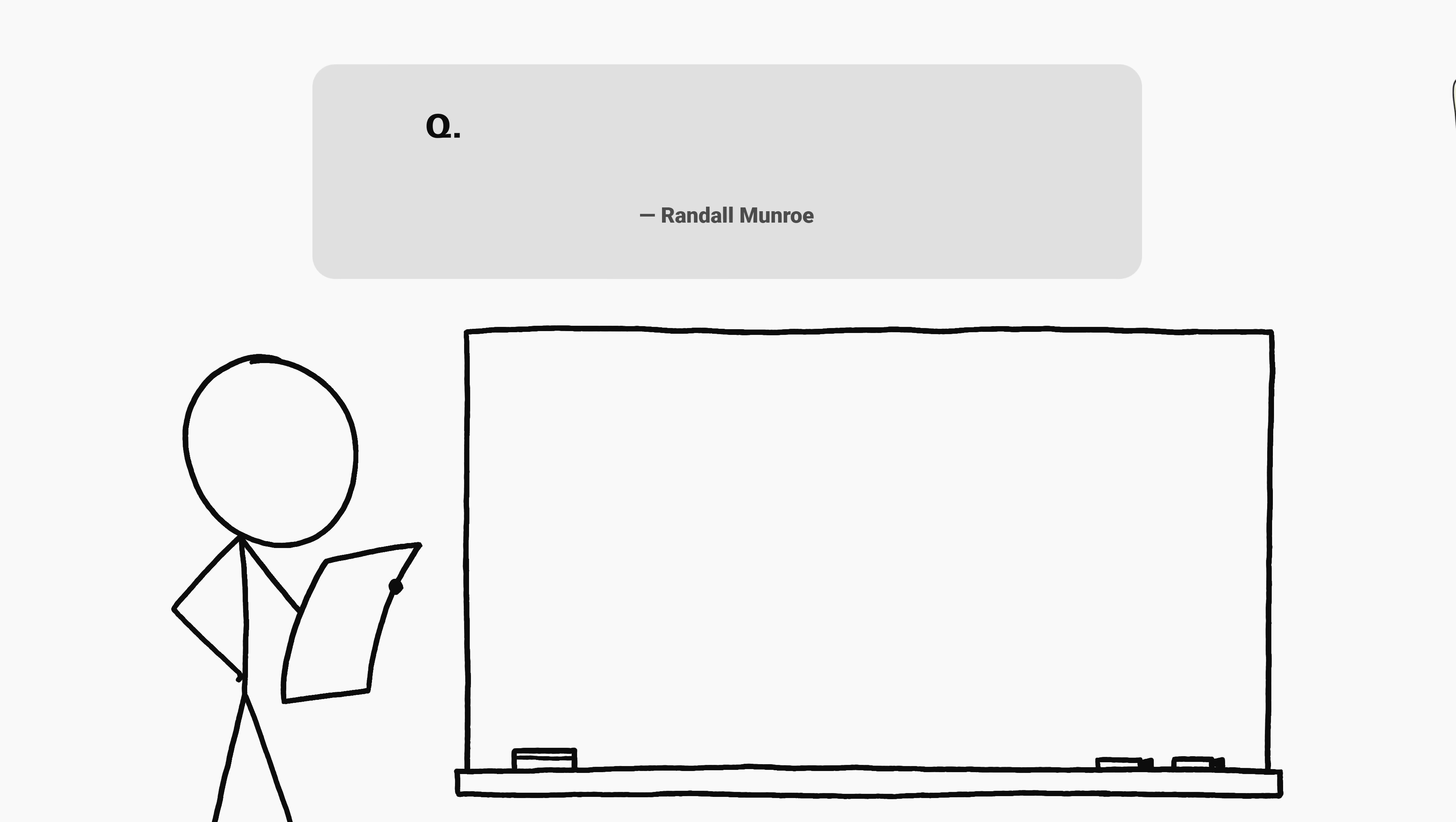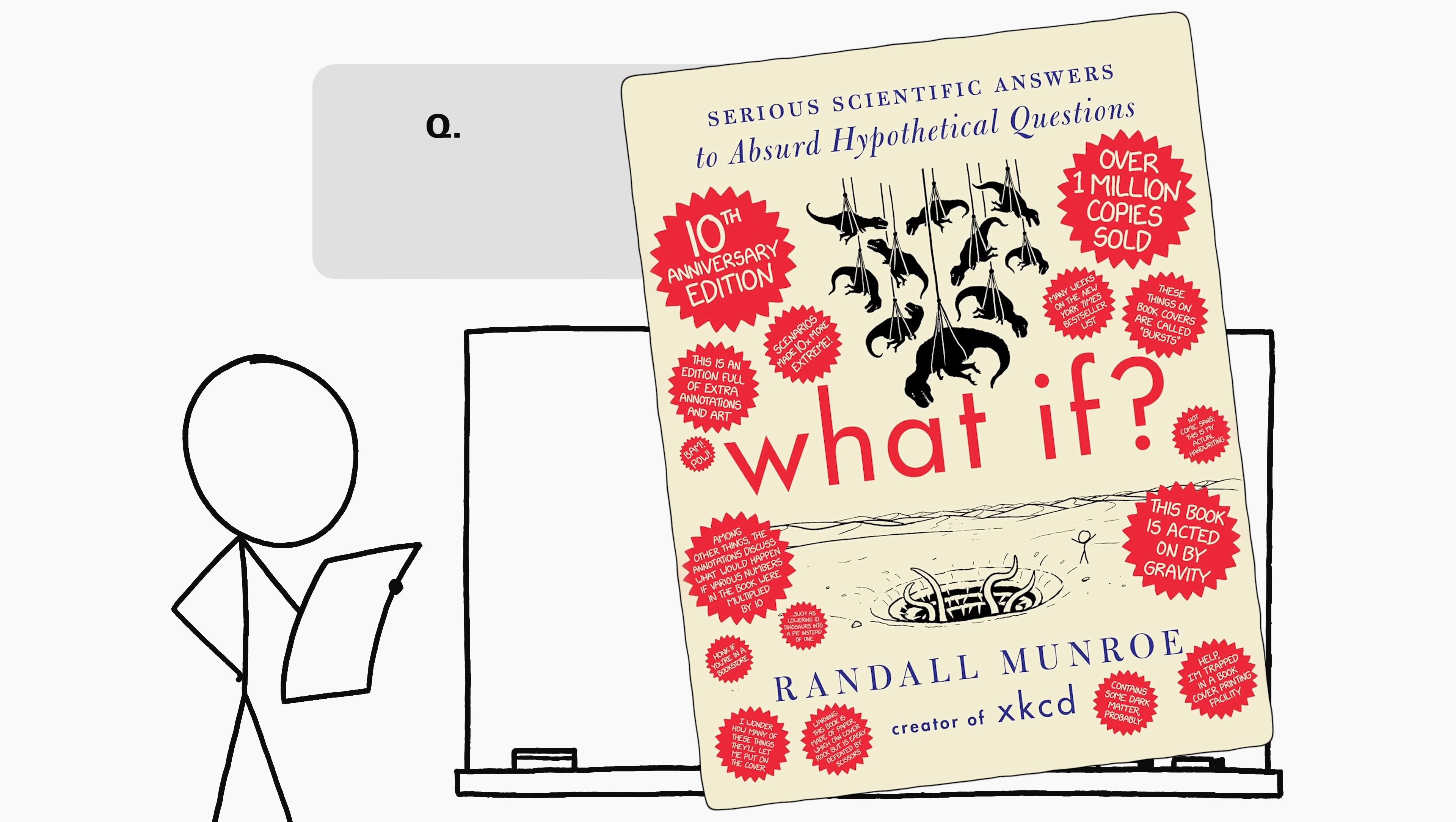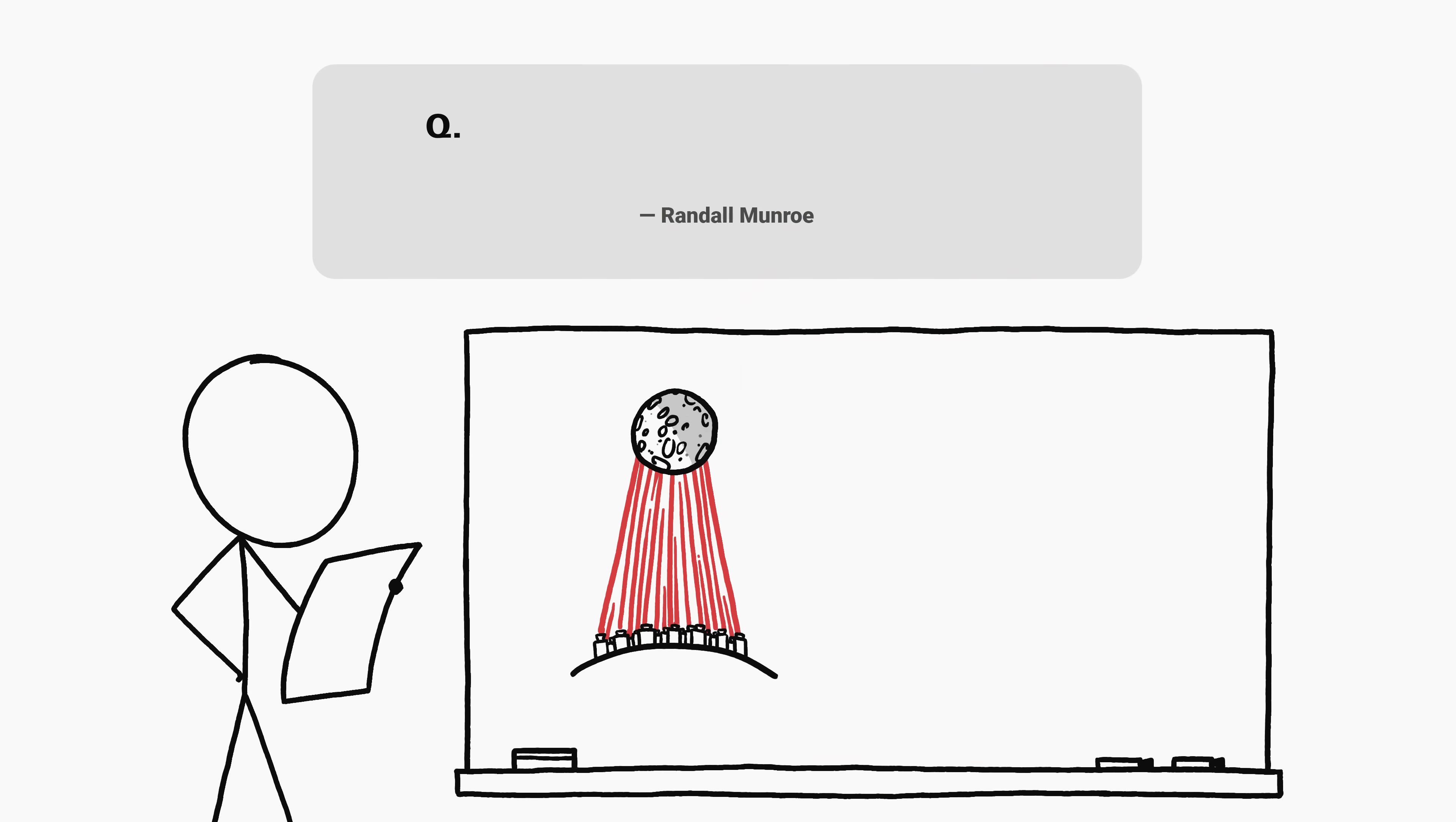This question comes from me. It's a new chapter from the 10th anniversary edition of What If, which is now available online and in print. At the end of the laser pointer video, we constructed an array of lasers with a total power of 2 times 10 to the 24 watts, which not only lit up the moon but violently ejected it from orbit around the Earth. We decided that was enough power.